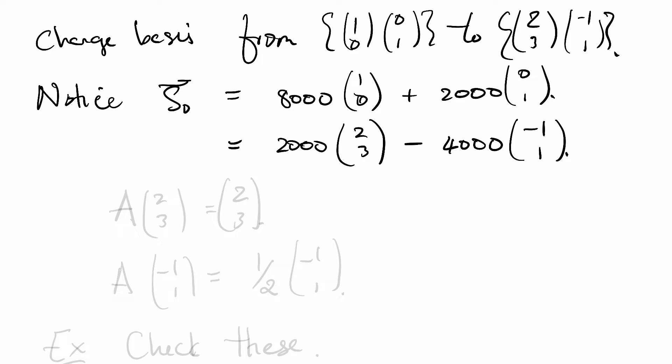And here's what I want you to note about this. A times the vector (2,3) is again the vector (2,3). A times the vector (-1,1) is a half times the vector (-1,1). As an exercise please check these two multiplications.